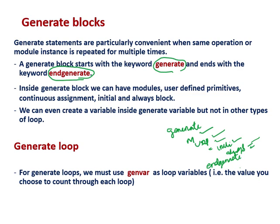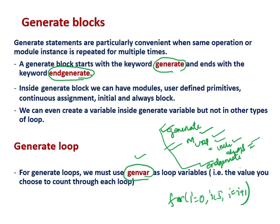Now for generate loops, we must use 'genvar' as the loop variable. This is a system-defined variable, predefined inside the Verilog library — it is not user-defined. The genvar value is used to count through each loop iteration. For example, 'for i = 0; i < 5; i = i + 1' — here the variables like 'i' in a normal loop would be user-defined, but for a generate loop we use the system-defined genvar.